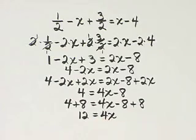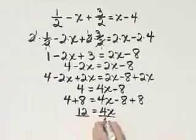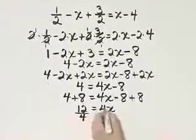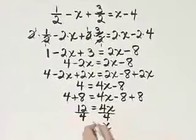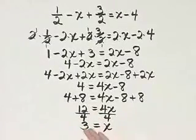And then how do I finish solving? I'm going to go ahead and divide the left and right side by 4. Notice on the right side, I have x, and notice on the left side, I have 3. So x is equal to 3.